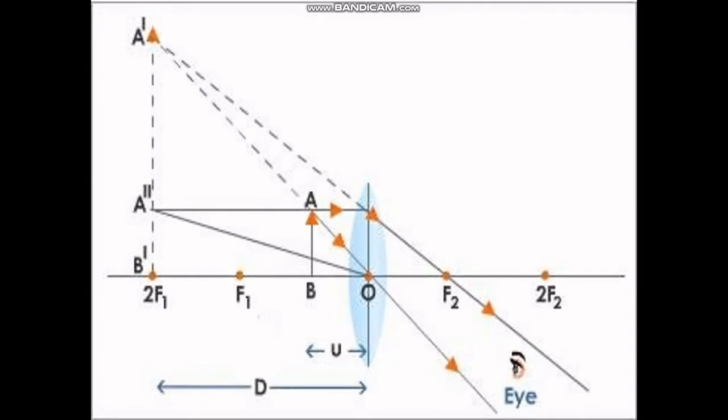So this is the diagram which you may recall for the image formation. Here you will find that this is the focus of this convex lens. The object AB is placed between O and F and you get an image at this place which is a magnified image and it is shown dotted because it is a virtual image. So this is the object distance and image is obtained at the distance of distinct vision.